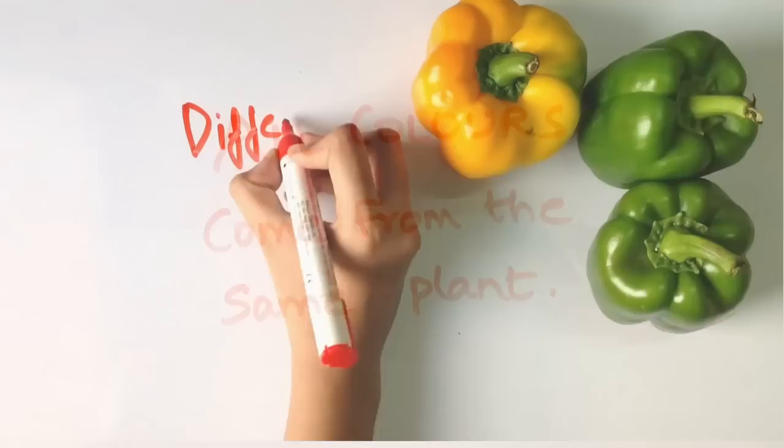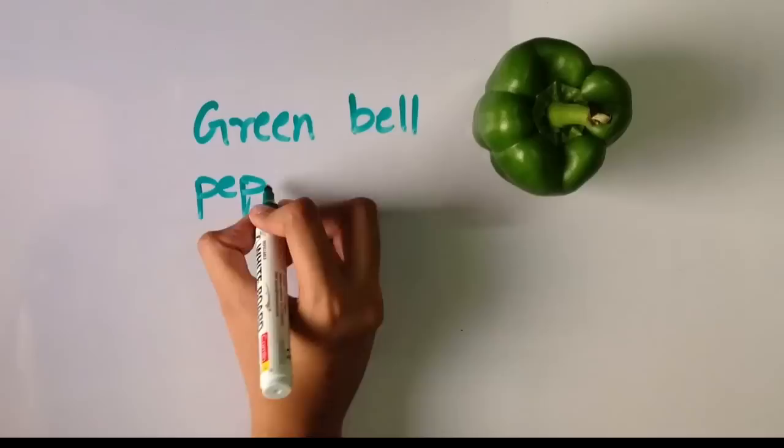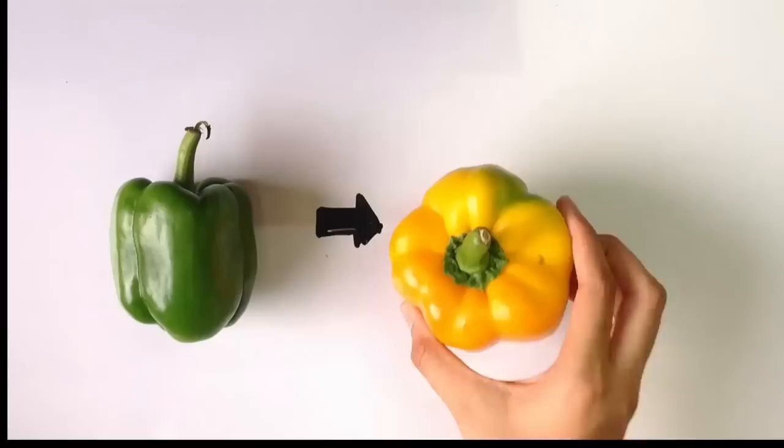All colours come from the same plant, but the difference is caused at the different stages of ripening. The most common green bell peppers are harvested before they are fully ripe. This green one converts into the yellow one, and the yellow one finally turns into the red one.